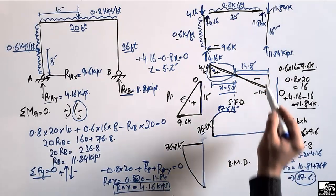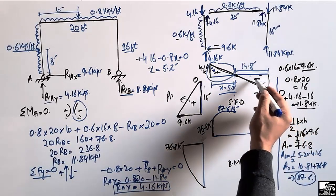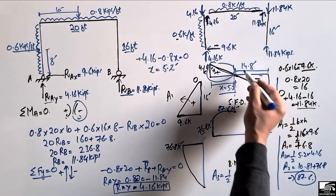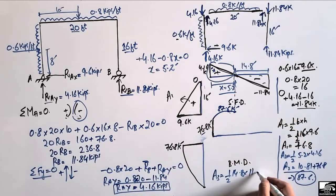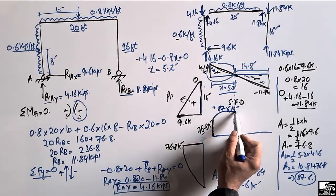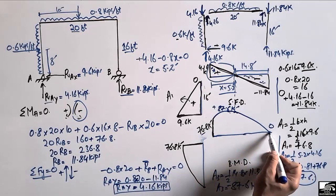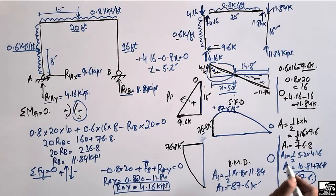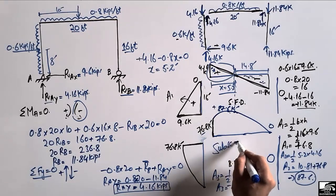The remaining area A3 is the negative shear triangle: A3 = 0.5 × 14.8 × 11.84 = 87.6 kip·ft in the negative direction. Adding negative 87.6 to positive 87.6 gives zero bending moment at the right end of the beam. The right column has zero shear force, so it also has zero bending moment. This completes the shear force and bending moment diagram for the frame. Don't forget to subscribe for daily civil engineering videos.